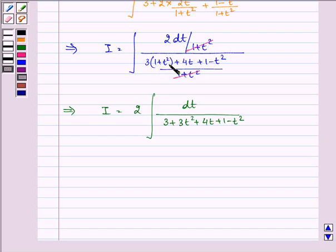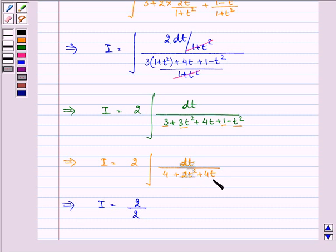We have opened the bracket I is equal to 2 integral dt upon 3 plus 1 gives us 4 plus 3t square minus t square gives us 2t square plus 4t. So now let us take out 2 common from the denominator we are left with dt upon t square plus 2t plus 2.